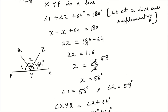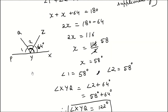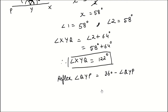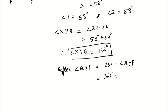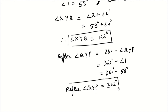The second answer asked is the reflex angle of QYP. Angle QYP is angle 1. To find the reflex angle, we subtract from 360 degrees. So reflex angle QYP equals 360 minus angle 1, which is 360 minus 58 degrees, giving us 302 degrees. So reflex angle QYP is 302 degrees.